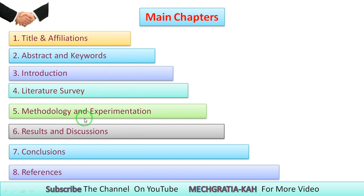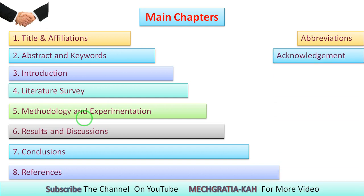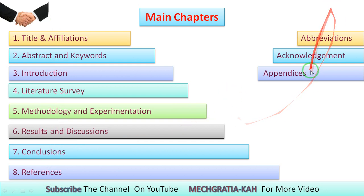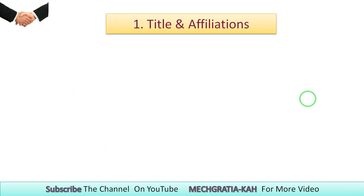Let's go to the first slide where we will see how to write the title and affiliation. On the right side, I have given some abbreviations, acknowledgment, and appendices. All research papers have these eight compulsory points. However, abbreviations, acknowledgement, and appendices are not mandatory in every research paper — they are only required if the journal or website specifically requires them.